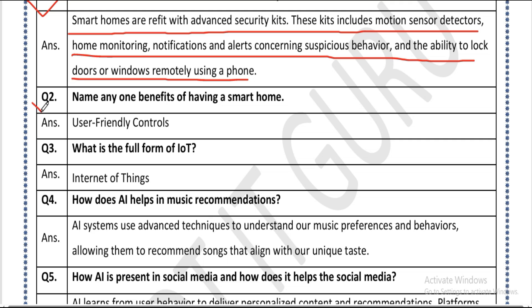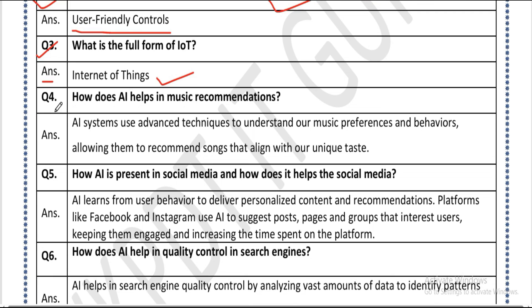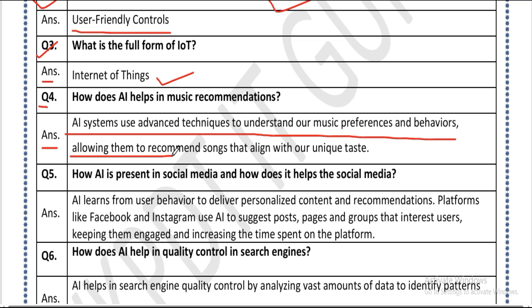Question two: name any one benefit of having a smart home. Answer: user-friendly control. Question three: what is the full form of IoT? Answer: Internet of Things. Question four: how does AI help in music recommendation? Answer: AI systems use advanced techniques to understand our music preferences and behaviors, allowing them to recommend songs that align with our unique taste.